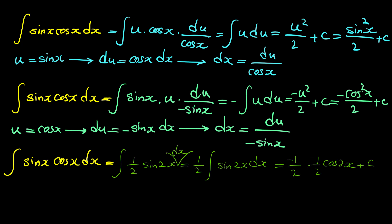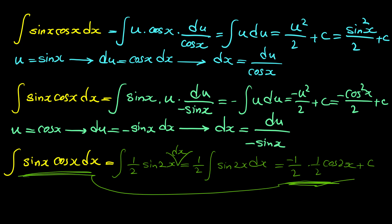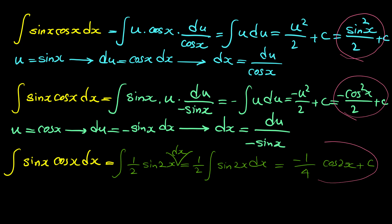This one half comes from the chain rule: the derivative of cosine of 2x brings down a factor of 2, so we need one half to cancel that 2. Alternatively, you can use u substitution with u equal to 2x. Finally, the integral of sine x cosine x dx is negative one fourth cosine of 2x plus C, since one half times one half is one fourth.